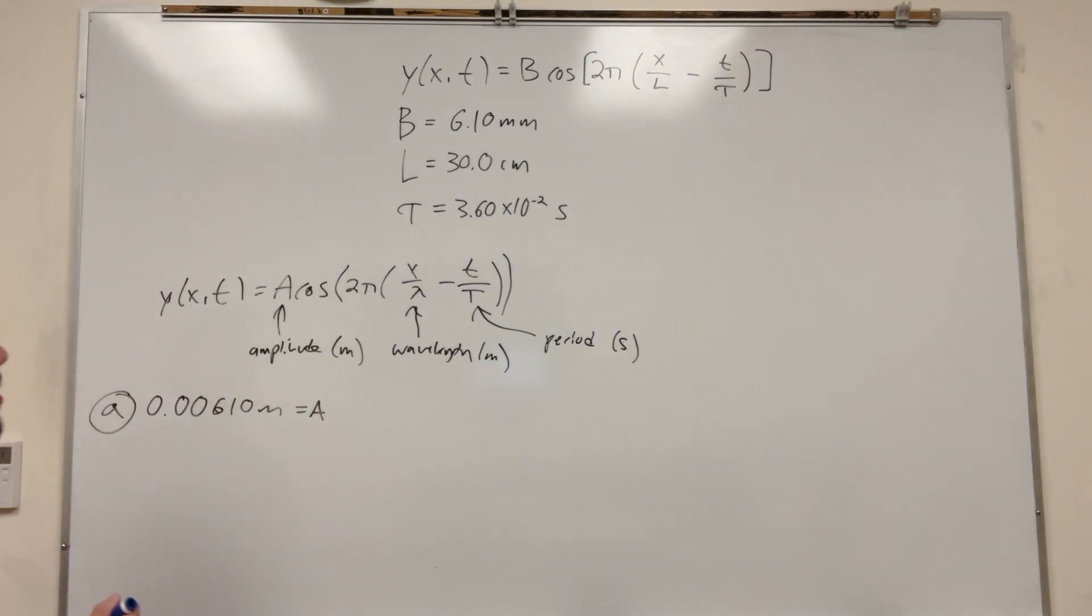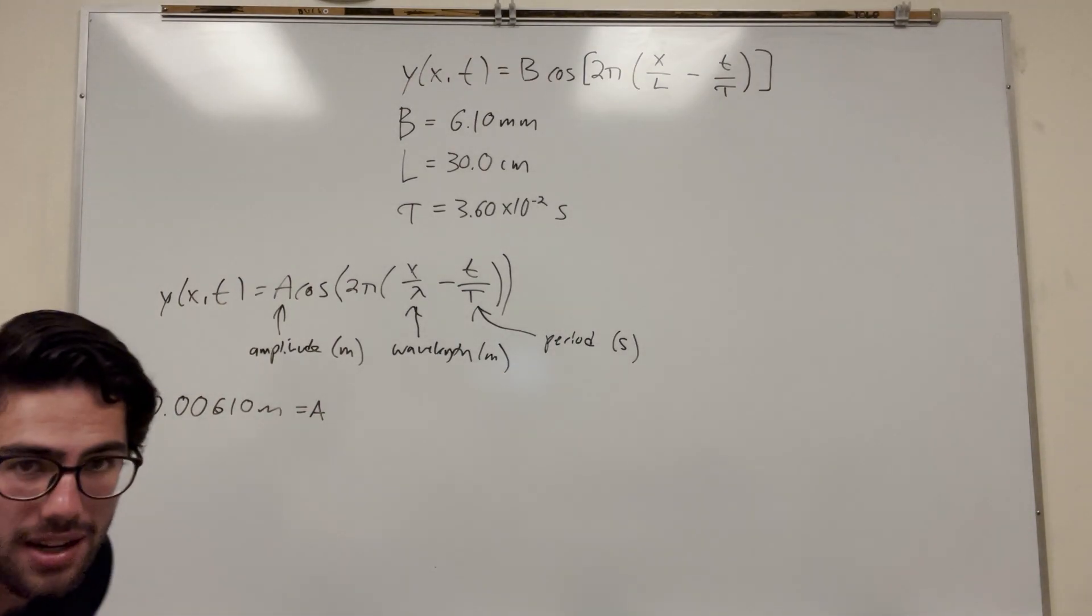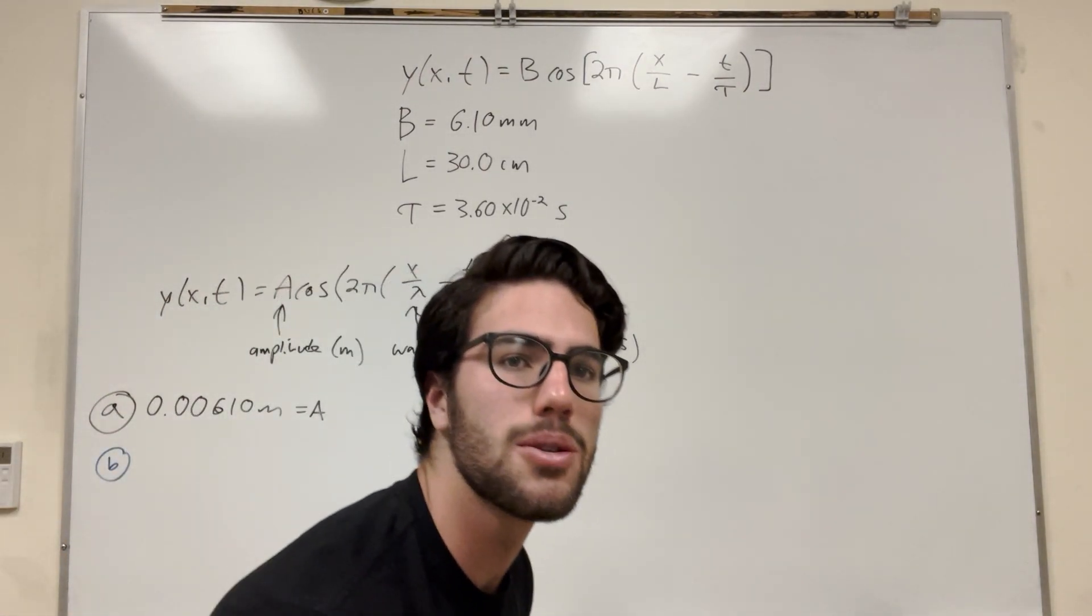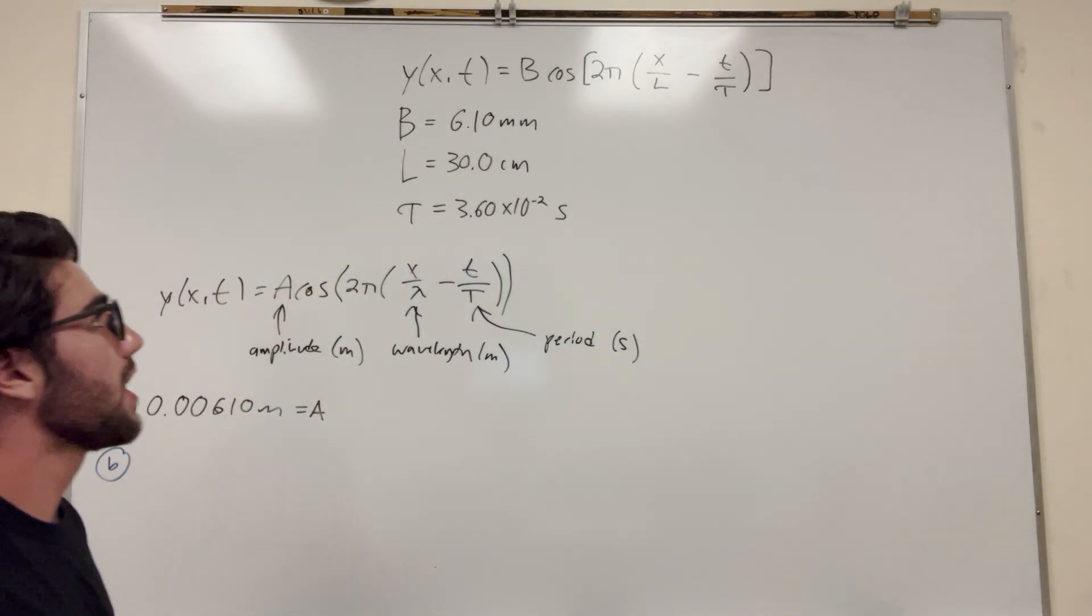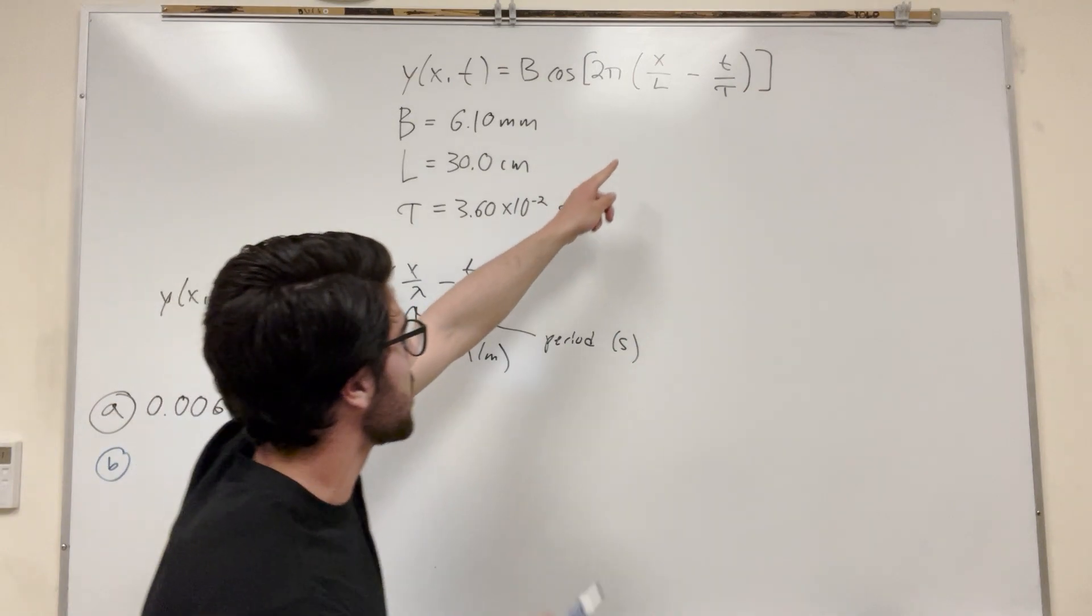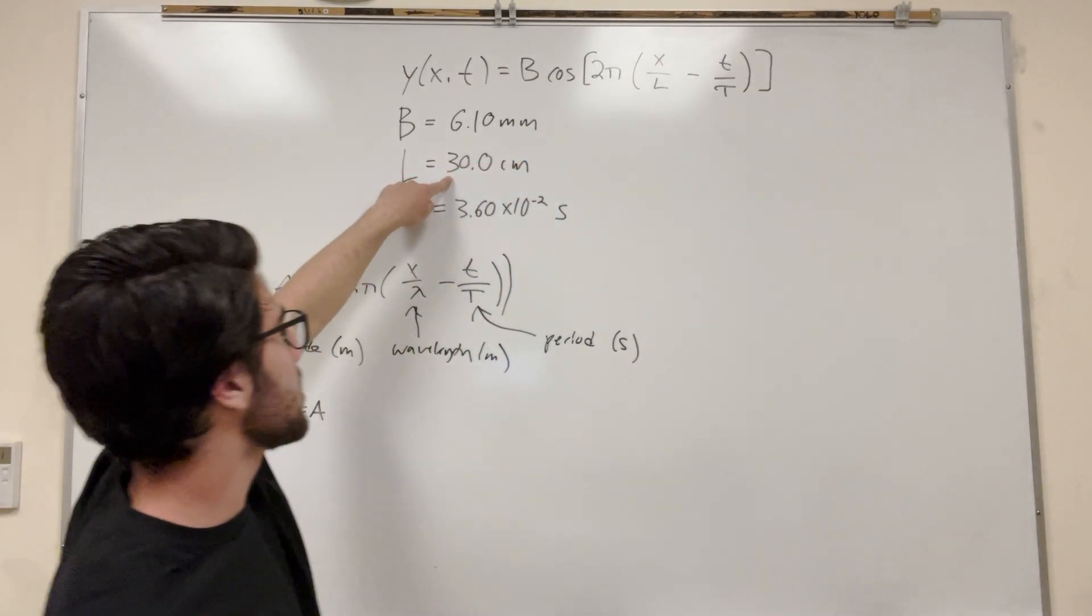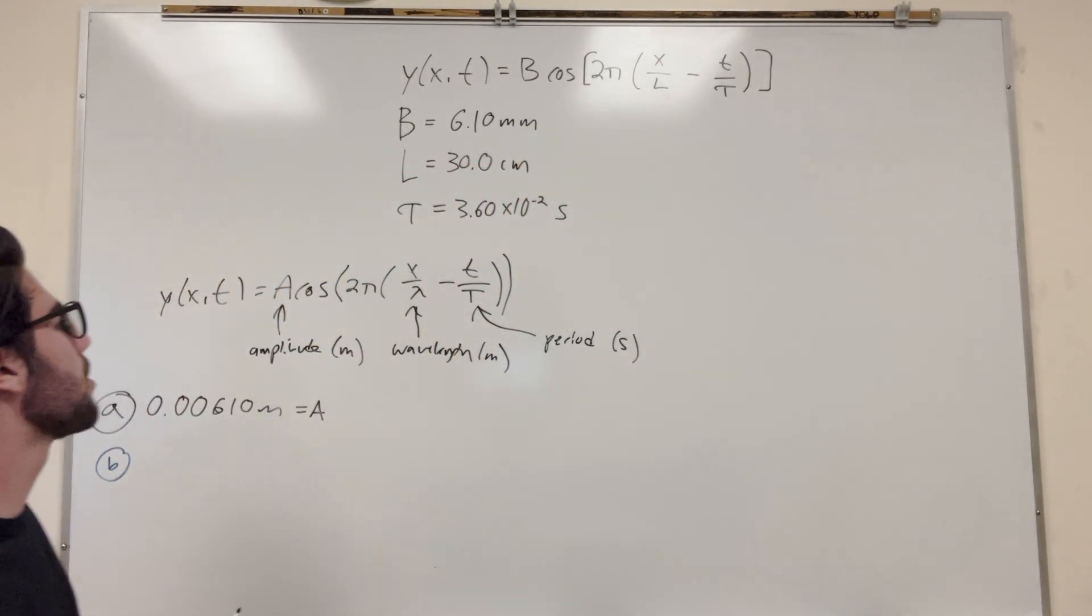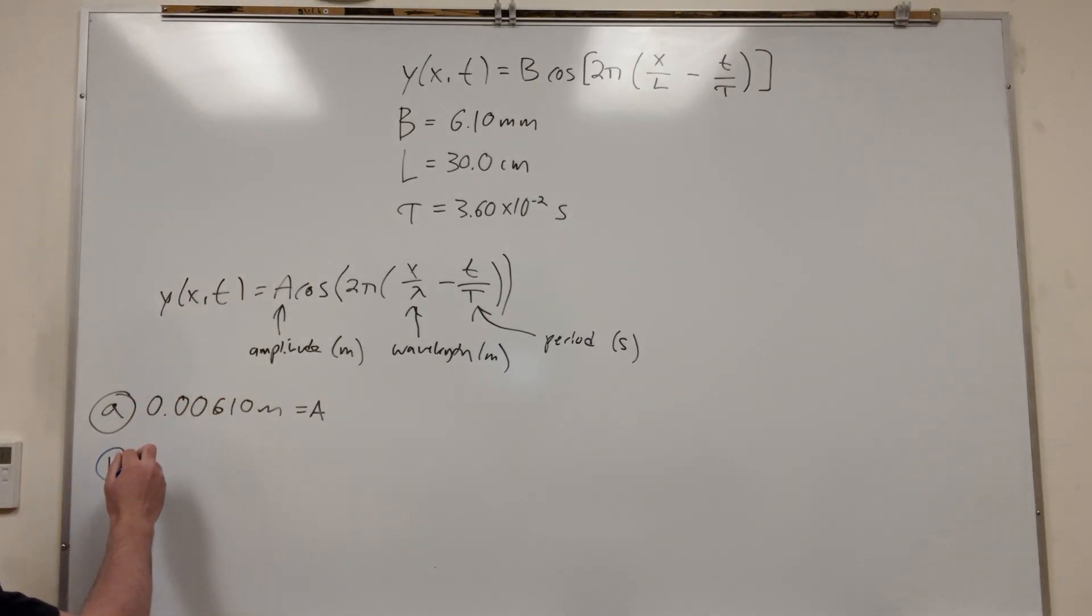Part B is asking for its wavelength. So wavelength again is this lambda here. This lambda corresponds to the value of L. So L is 30 centimeters. It wants it in meters, so we're going to say that its wavelength lambda is equal to, divide it by 100 to get it in meters, so it's 0.3 meters. That's its wavelength.